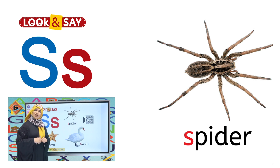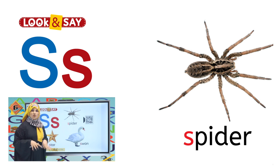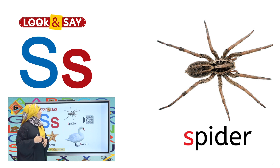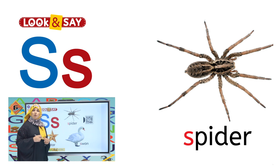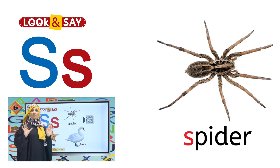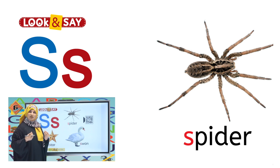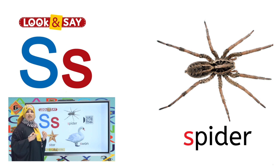We have studied letter O — octopus also has how many legs? It's also 8 legs. And this spider also has 8 legs: 1, 2, 3, 4, 5, 6, 7 and 8! And you know that a spider makes a web, and that web is its house. Spider is an insect.